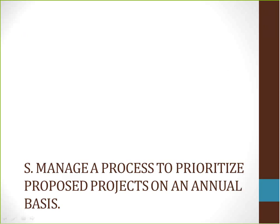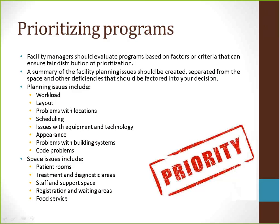Next, managing a process to prioritize proposed projects on an annual basis. Facility managers should evaluate programs based on factors or criteria that can ensure fair distribution of prioritization. A summary of the facility planning issues should be created, separated from the space and other deficiencies that should be factored into your decision. Planning issues include layout, scheduling, appearance, or code problems. Space issues can include patient rooms, staff and support space, and food service.